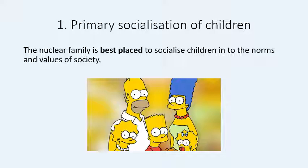There was also a far smaller number of reconstituted families because divorce was far more frowned upon. The options available at the time Parsons was writing were essentially nuclear families, lone parent families, and occasional extended or reconstituted families, so he is largely comparing the nuclear family to the lone parent family. He says the nuclear family is best placed to socialise children because it contains both a mother and a father, going down a very gender-stereotypical route — this was 1950s America.